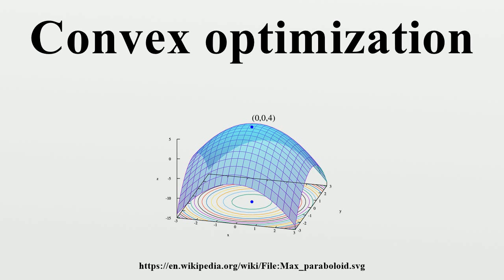Examples. The following problems are all convex minimization problems, or can be transformed into convex minimizations problems via a change of variables: Least squares; Linear programming; Convex quadratic minimization with linear constraints; Quadratic minimization with convex quadratic constraints; Conic optimization; Geometric programming; Second-order cone programming; Semi-definite programming; Entropy maximization with appropriate constraints.